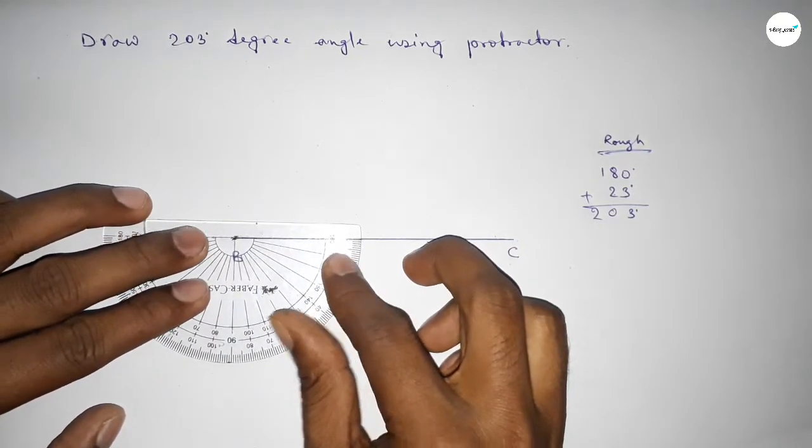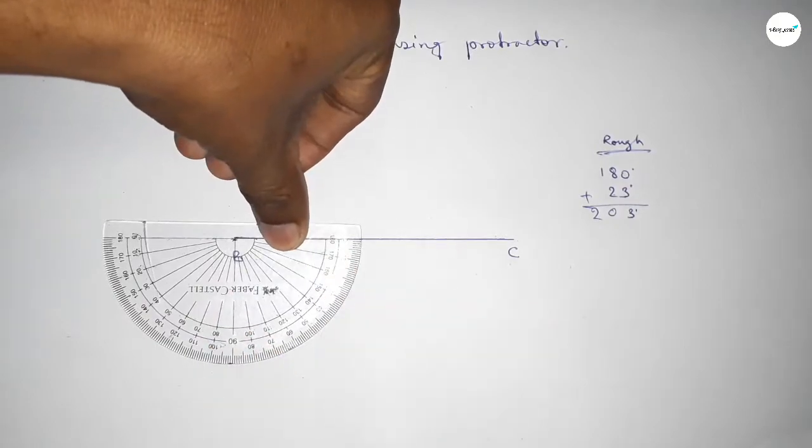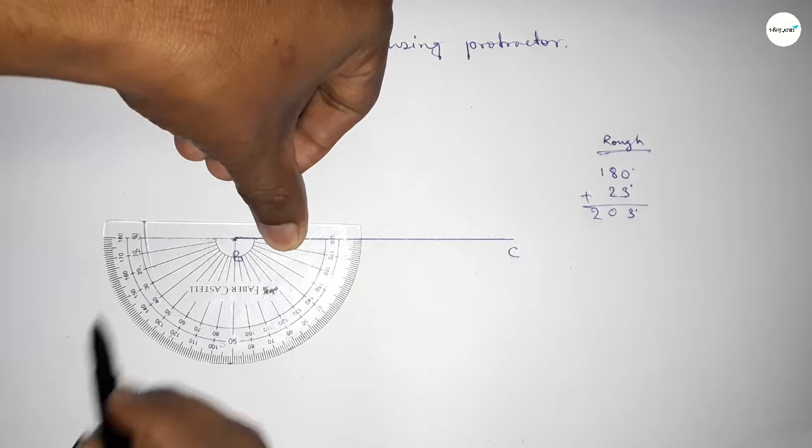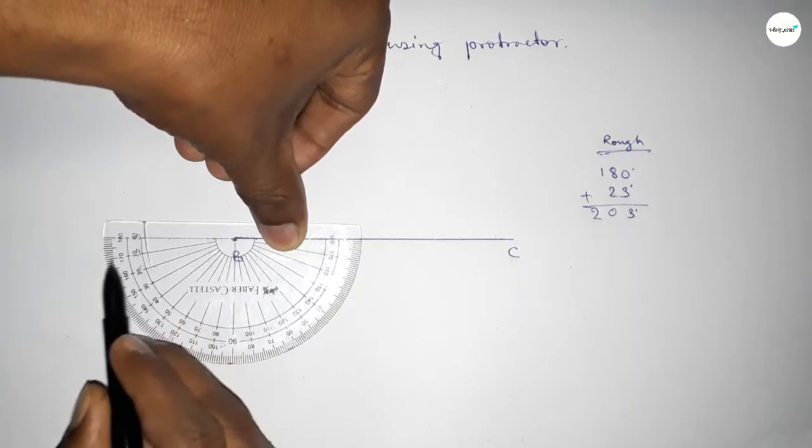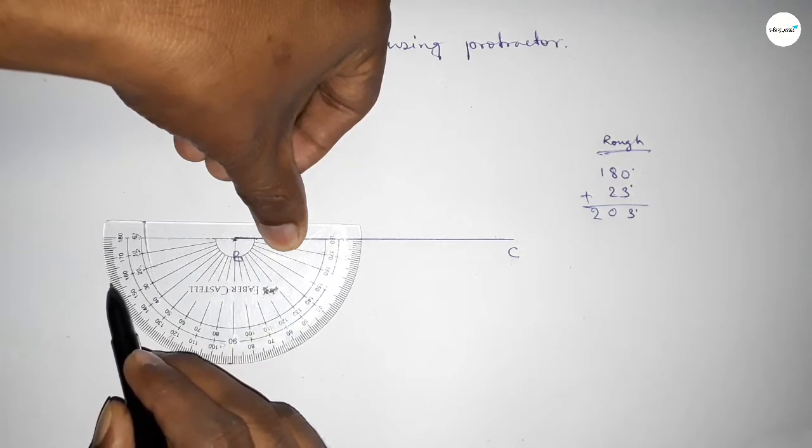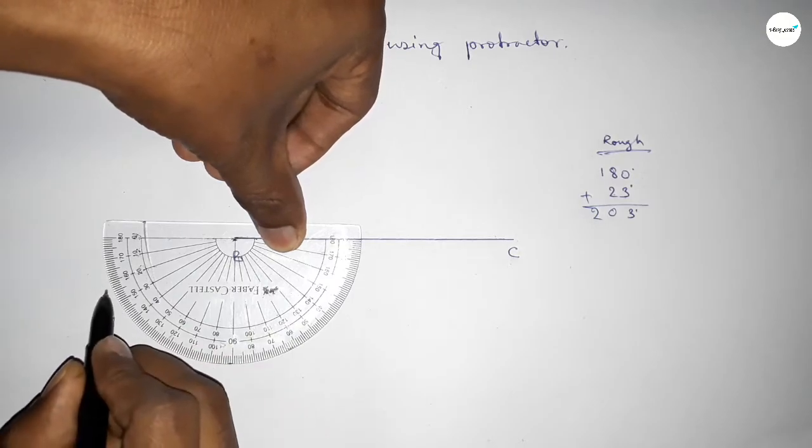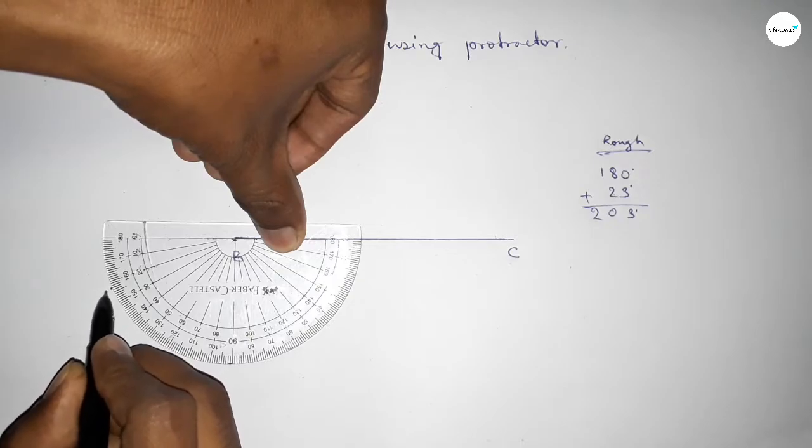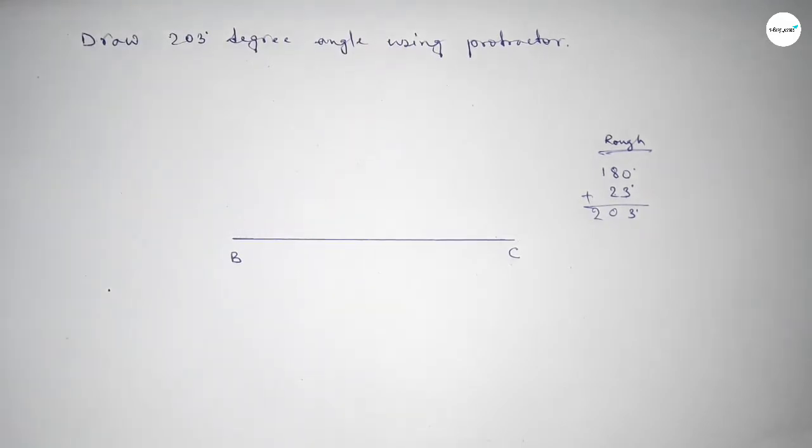So this is 180 degree angle. Again this is starting angle 0, 10, 20, 20, 21, 22, 23. So by adding 23 degree angle with 180 degree, then we can get 203 degree angle.